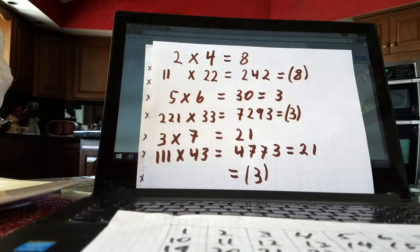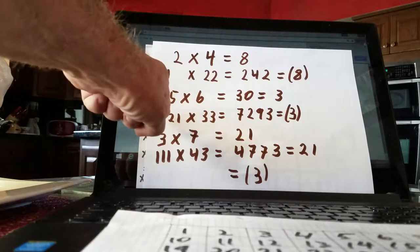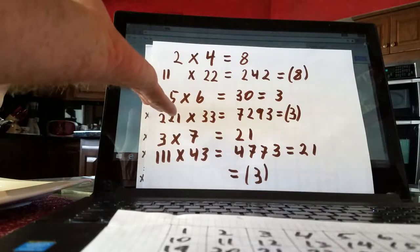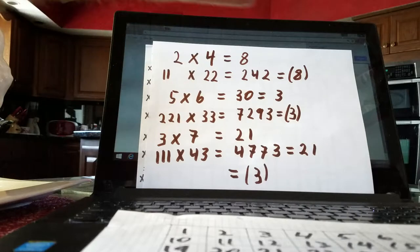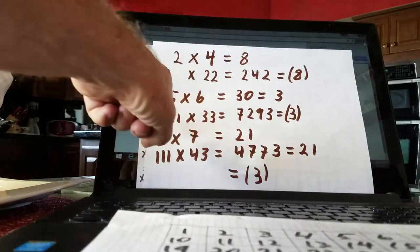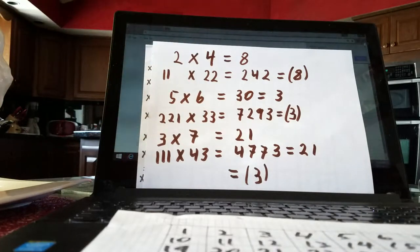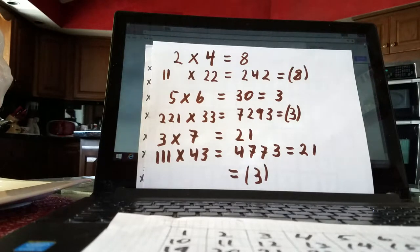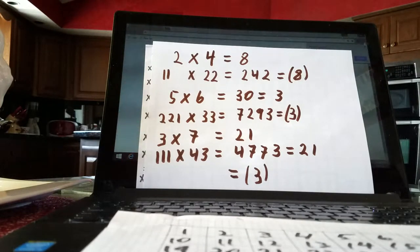I know that 5 times 6 is 30, but I also know that it's a 3. For instance, if we take a number like 221 that reduces to 5 and the number 33 that reduces to 6, so 221 times 33 has to reduce to a 3 too because it is a 3. Just using another simple example, 3 times 7 is 21, well that's a 3 too.